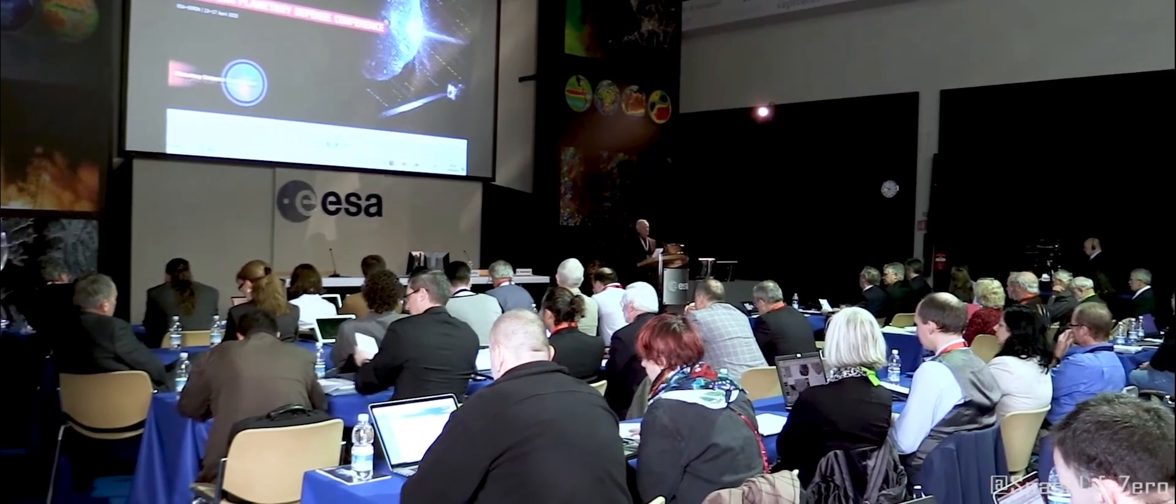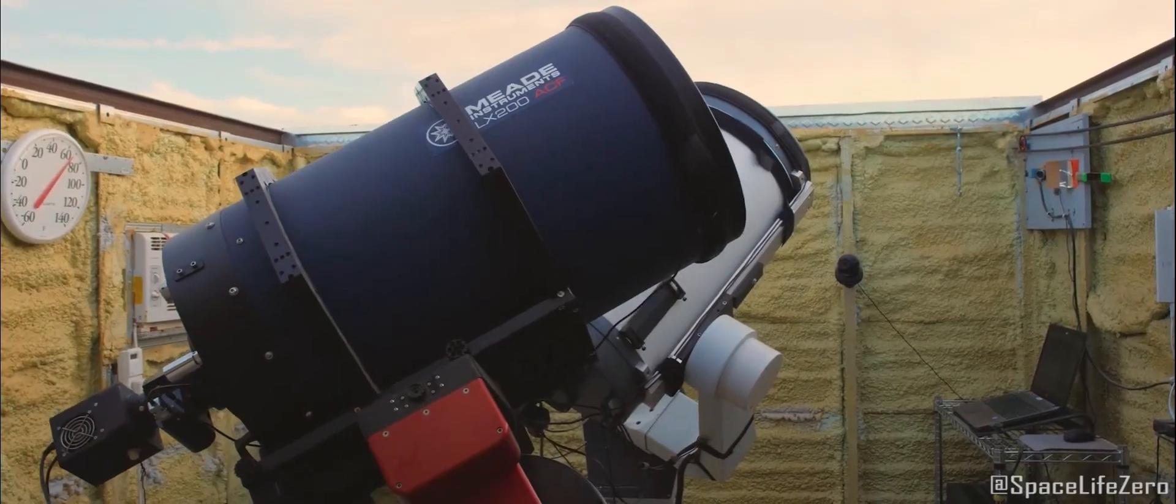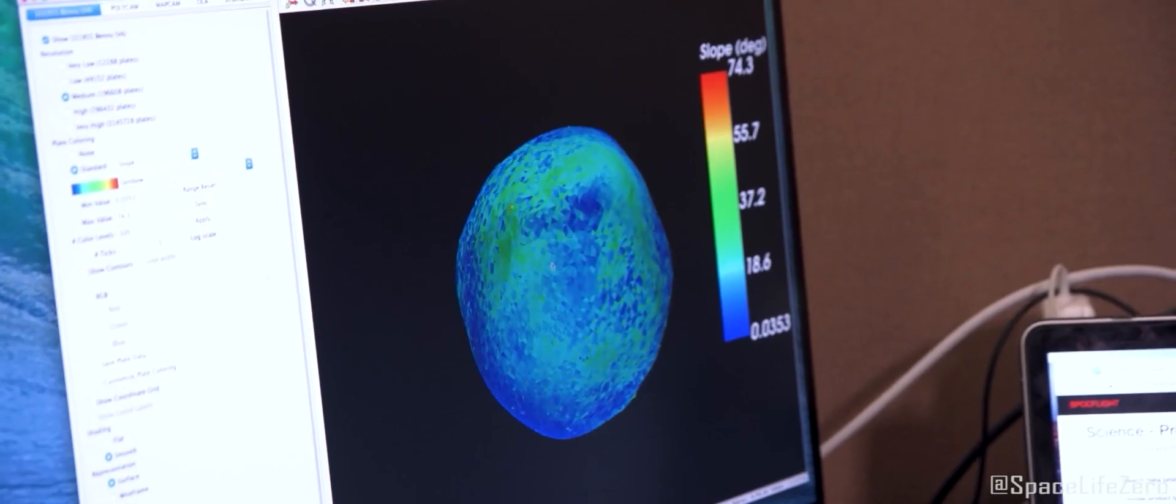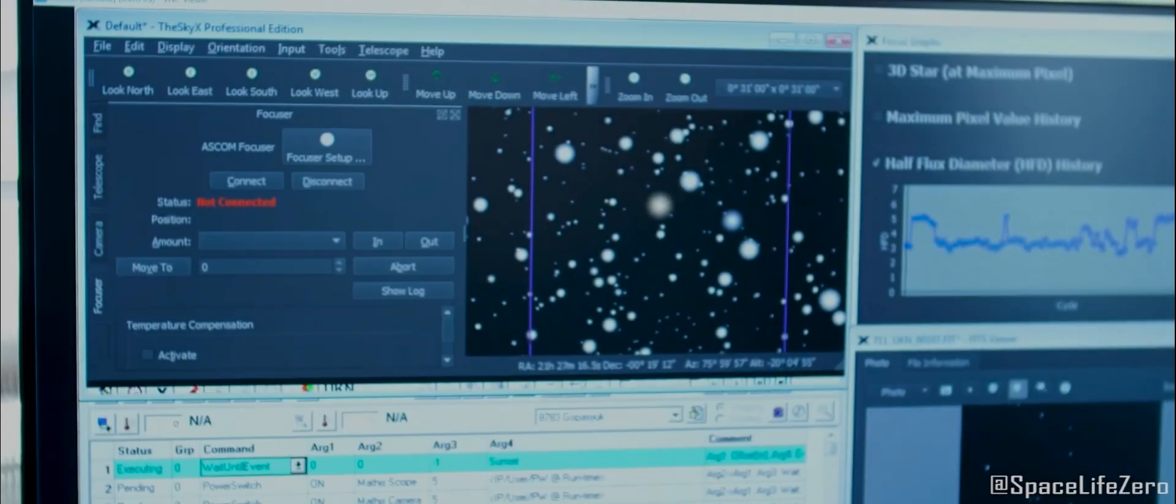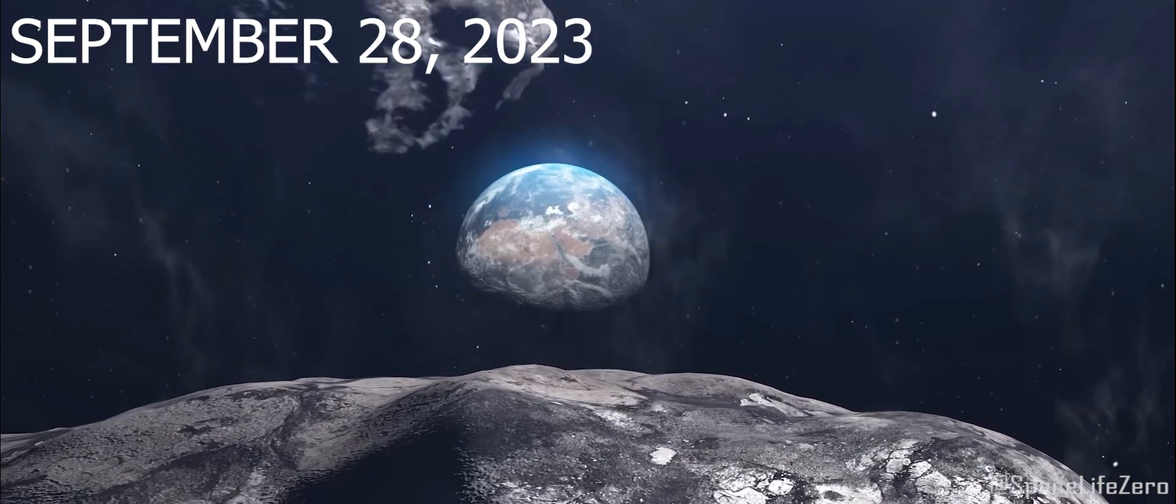NASA and other space agencies around the world closely monitor any objects approaching close to Earth with the help of advanced telescopes and tracking systems. They have spotted four asteroids racing through space at astonishing speeds towards Earth on September 28, 2023.